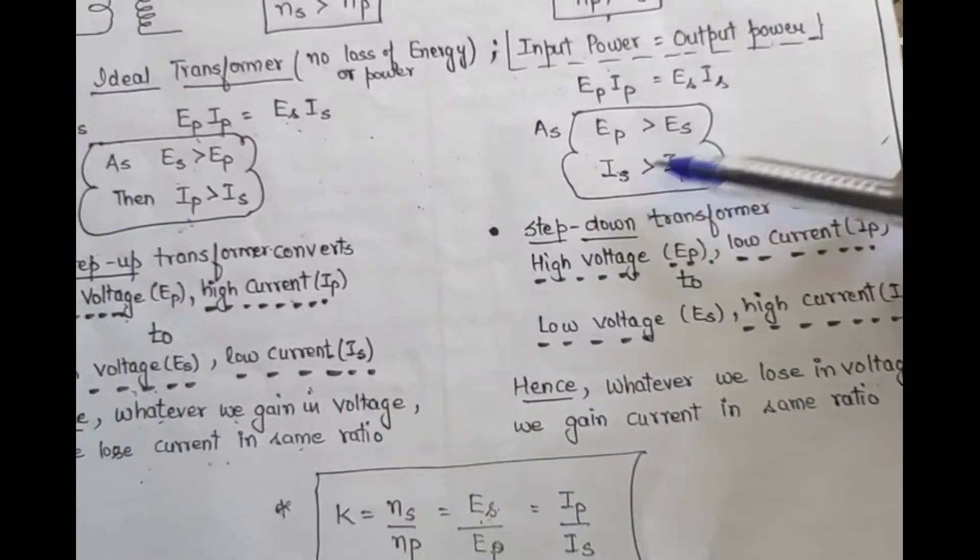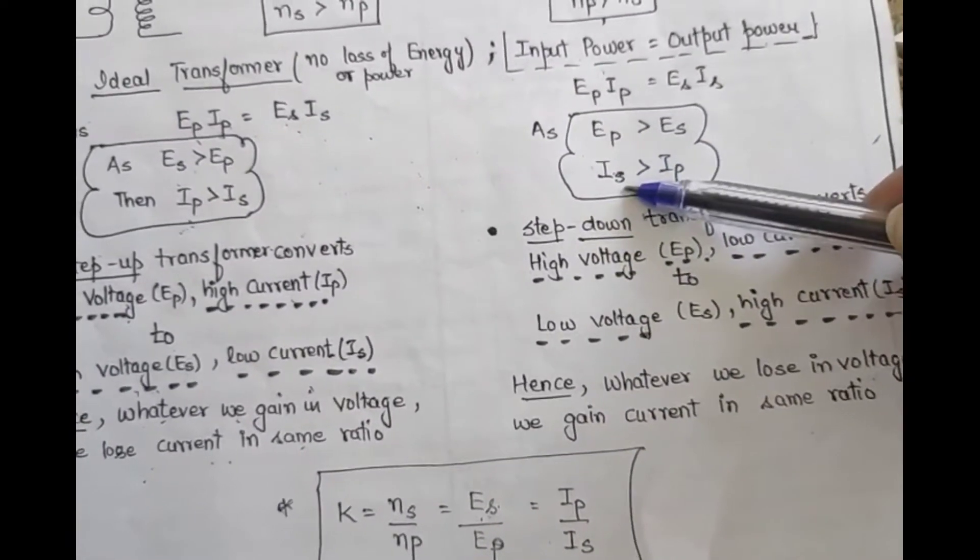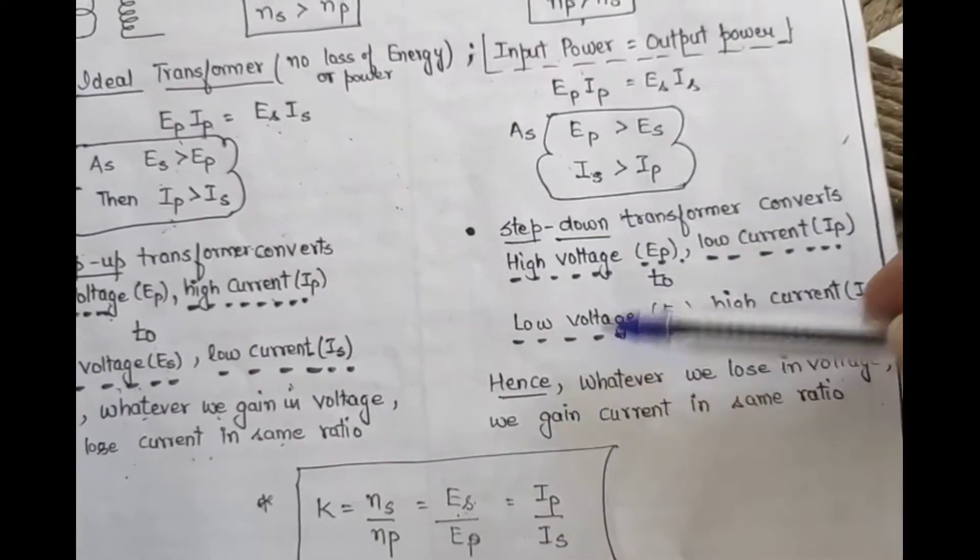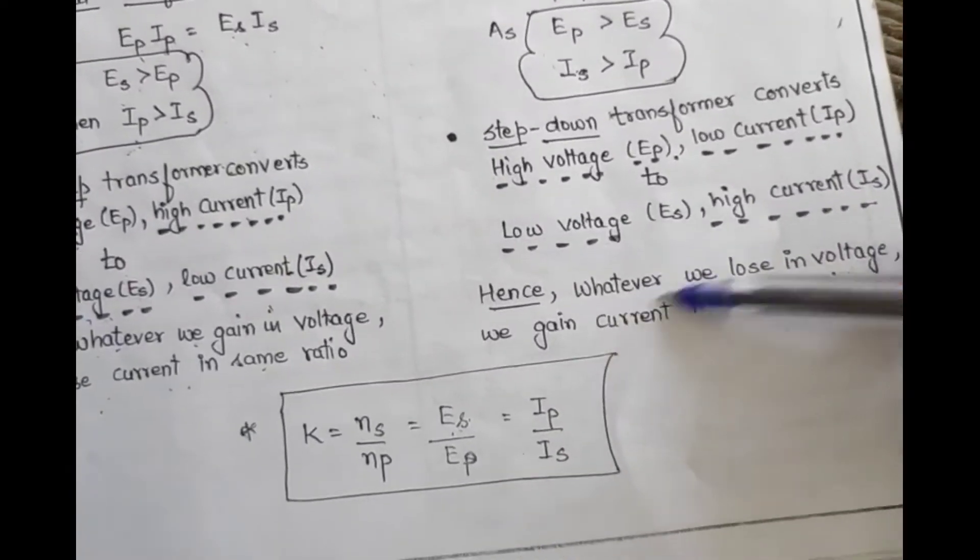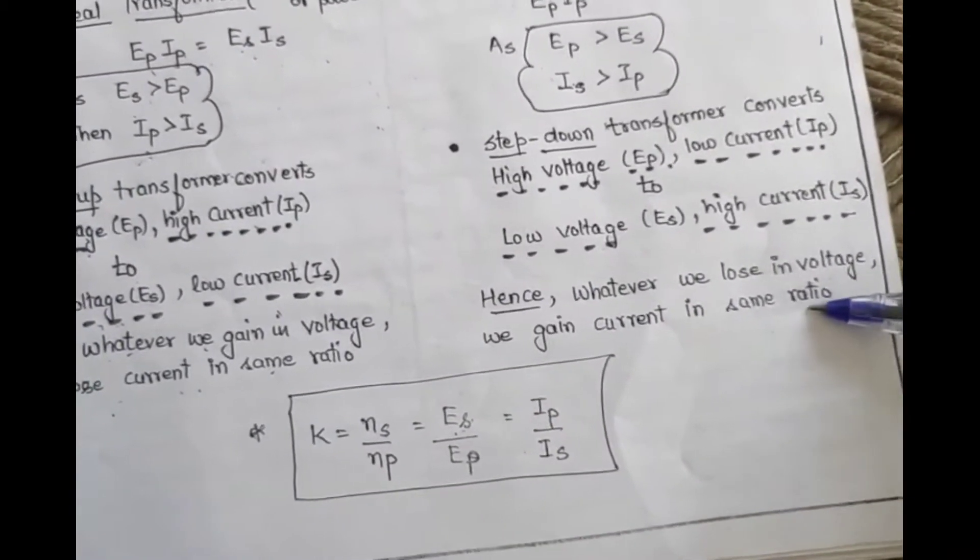In step-down, what will be bigger? We will say that EP, since it is bigger than ES, so this will be opposite, this will become bigger. That is, step-down transformer converts high voltage to low, but low current to high current. So what we write is whatever we lose in voltage, we gain the current in same ratio.